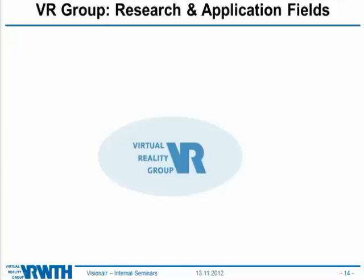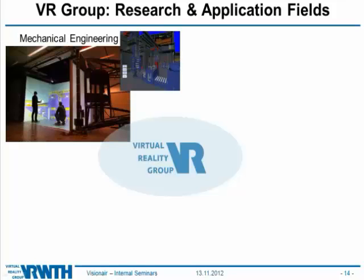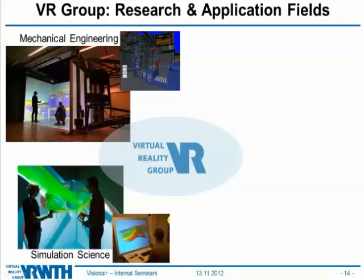My colleague Sebastian Pick will now present our research and application fields. The first main field is mechanical engineering — mostly visualization of factories or factory structures. Another field is simulation science, which is a rather large area. We have had a strong focus on flow phenomena but also cover other phenomena, basically everything that can be simulated. A further big field is medicine and neuropsychology, where colleagues work on various simulators to train doctors on medical hardware, including an operation simulator where you can perform cuts on the human body.